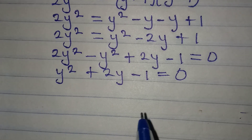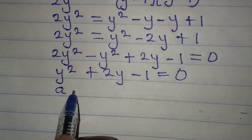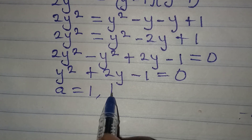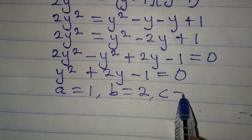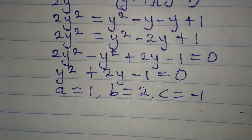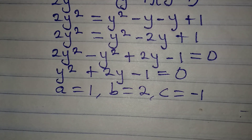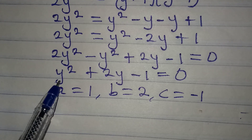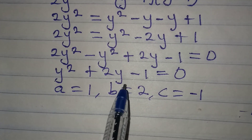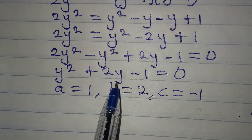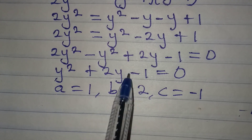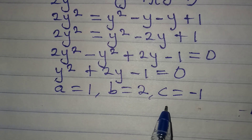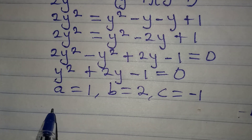I will use the formula method. For the formula, a = 1, b = 2, and c = -1. A is the coefficient of y², b is the coefficient of y, and c is the constant, which is -1.